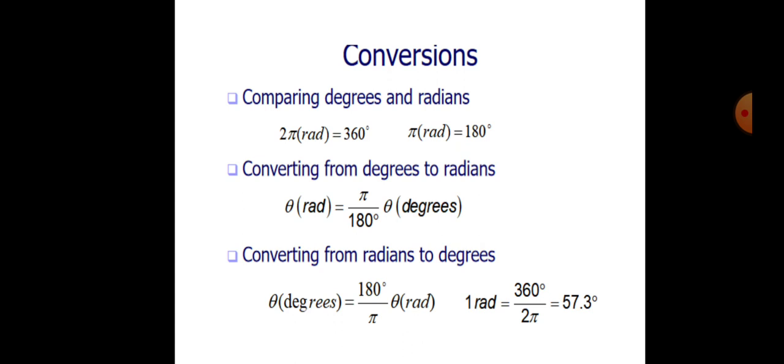Converting degrees to radians: 2·pi equals 360 degrees, pi equals 180 degrees. Theta in radians equals (pi / 180) times theta in degrees. Converting from radians to degrees: theta in degrees equals (180 / pi) times theta in radians. One radian equals 360 / (2·pi), which equals 57.3 degrees.